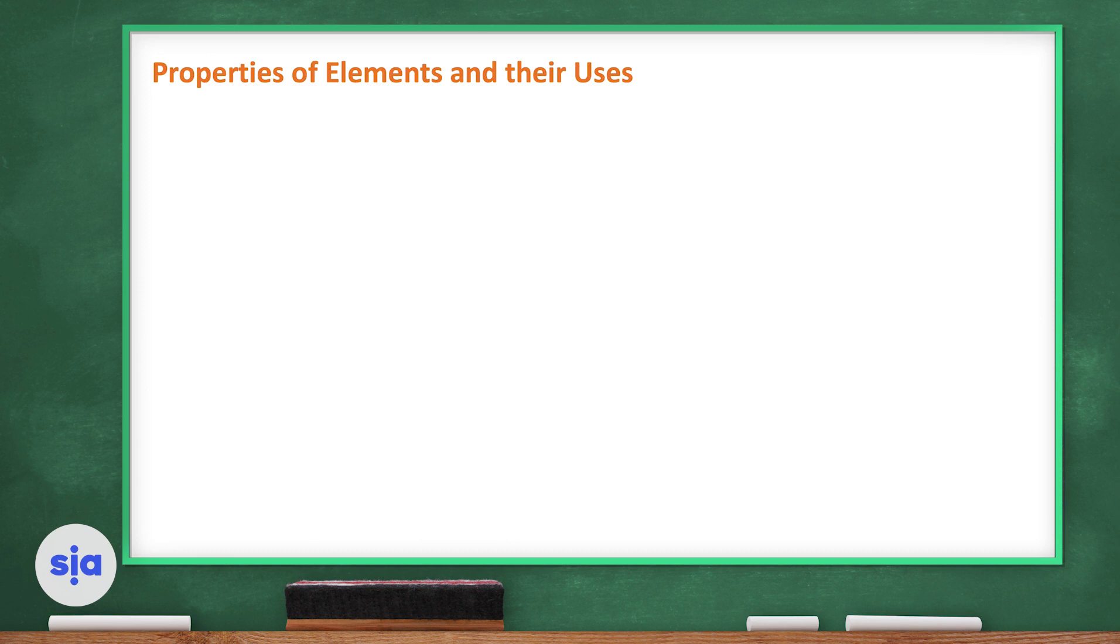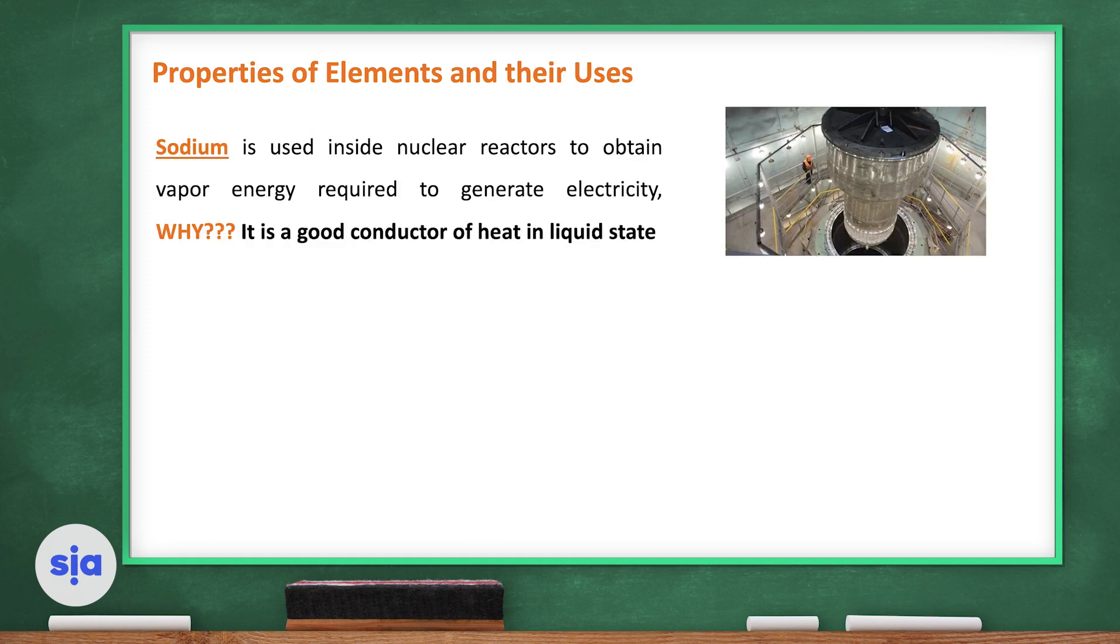Properties of elements and their uses. Now let's talk about some elements, their properties and their uses. Sodium, for example. Sodium is a metal. It's a good conductor of heat and electricity. It is used inside nuclear reactors to obtain vapor energy required to generate electricity. Remember, sodium is a metal. It's a good conductor of heat and electricity in liquid state.